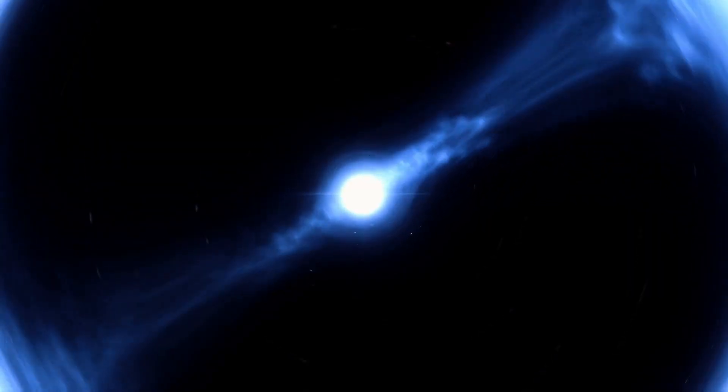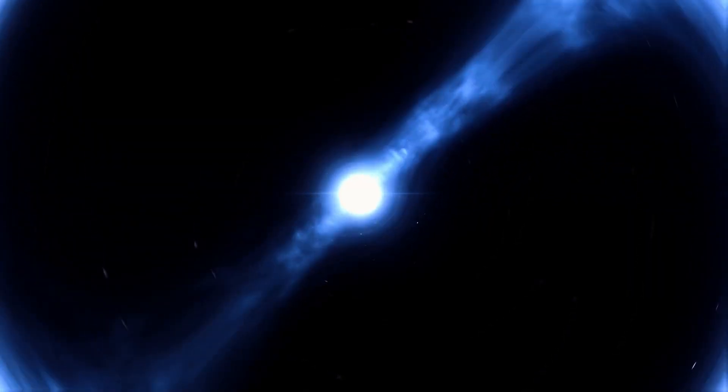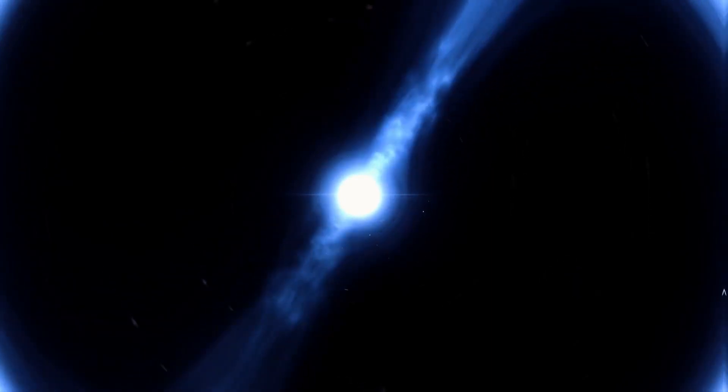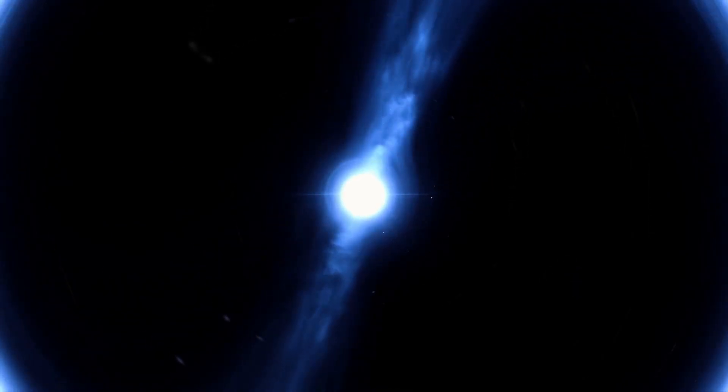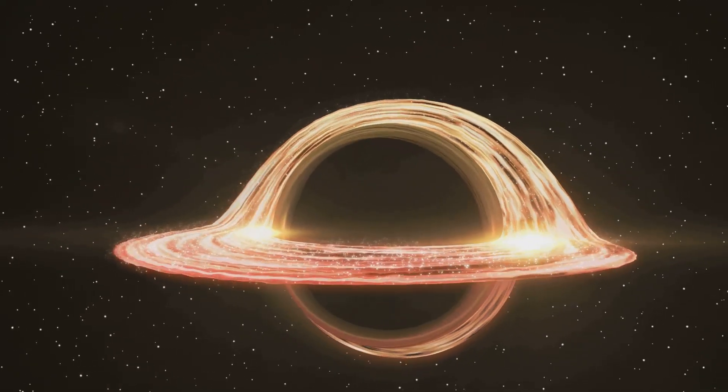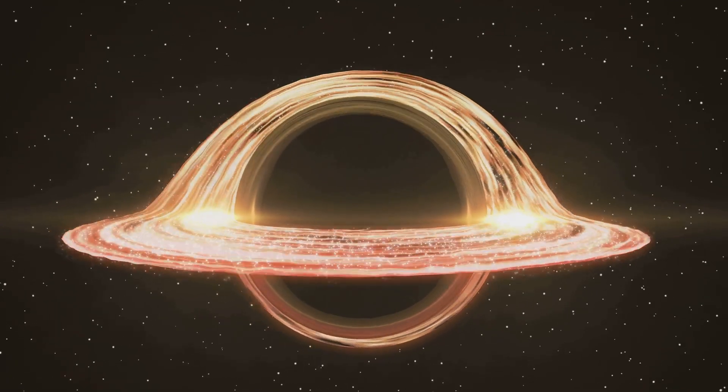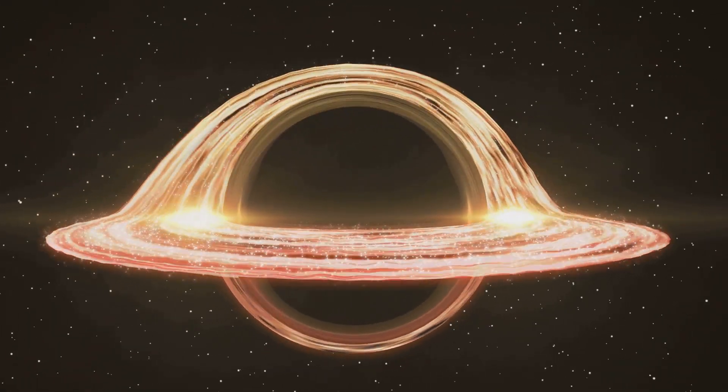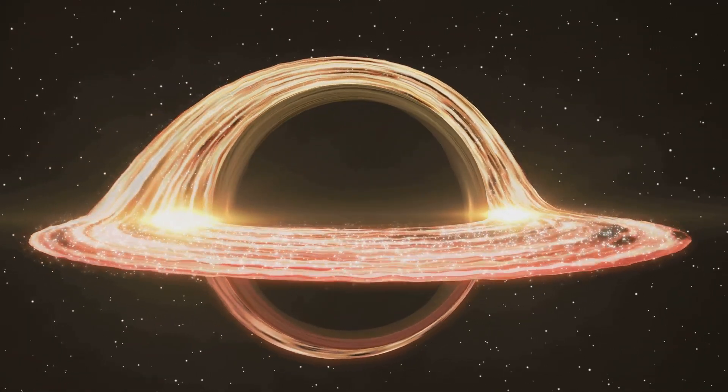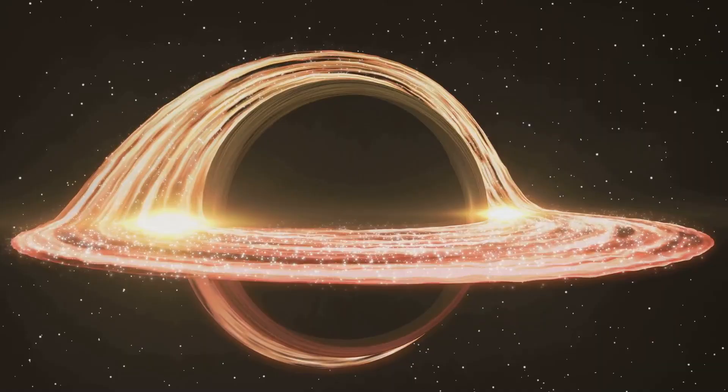Number 19, neutron stars pushing the limits. Neutron stars are already incredibly dense, but what happens when they push the boundaries of physics. If a neutron star accumulates enough mass to exceed the Tolman-Oppenheimer-Volkoff limit, it could collapse into a black hole, unleashing a devastating burst of energy.